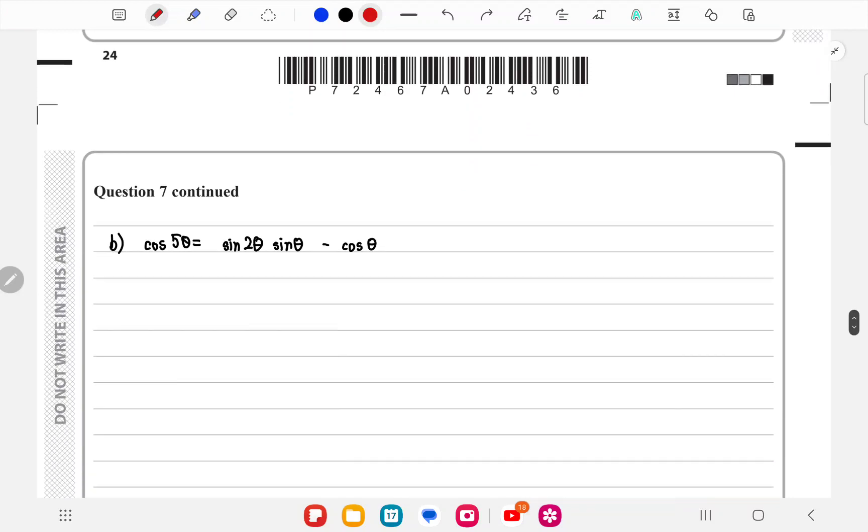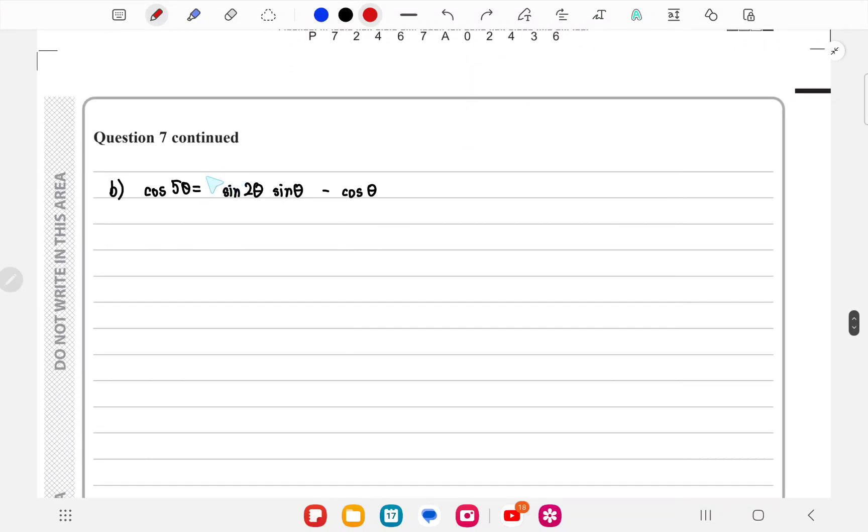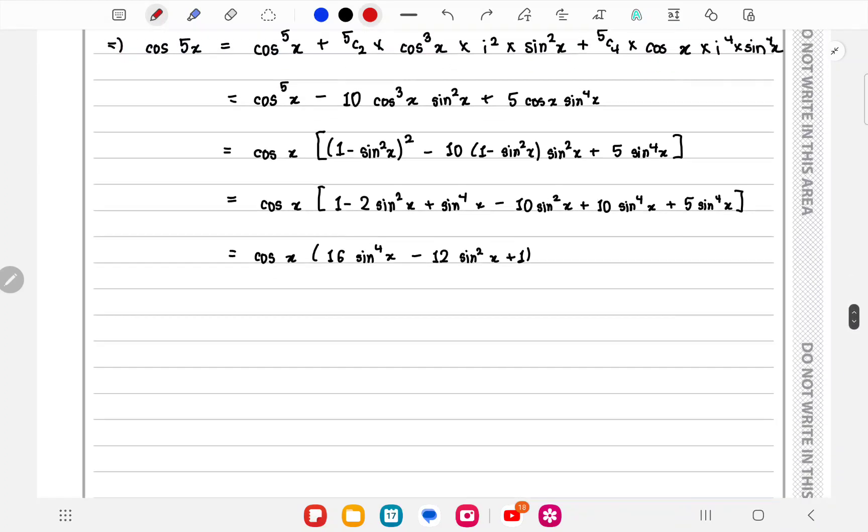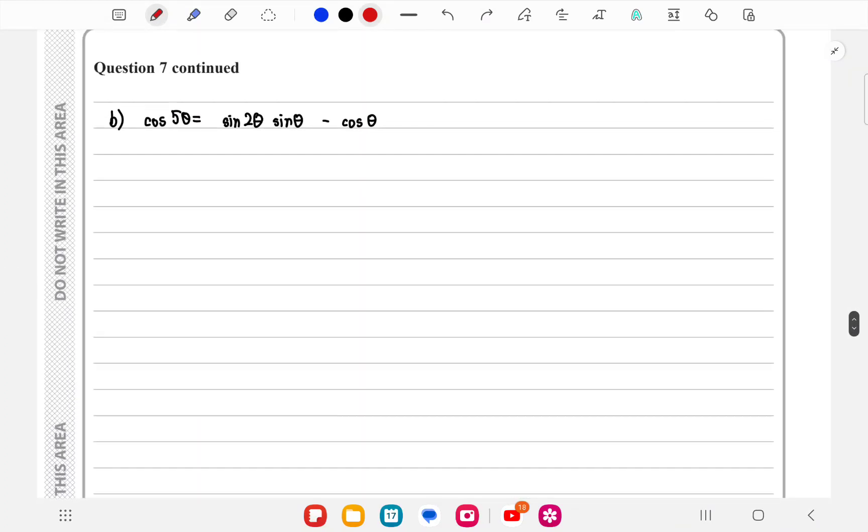So if you continue, we already found out cos 5x, so we'll just replace that with theta. We'll replace the x with theta, and we also know that sin 2θ can be written as 2 sin θ cos θ, so this will just be 2 sin² θ cos θ. Now you can see that you can cancel out the cos thetas.